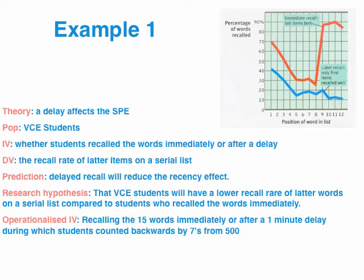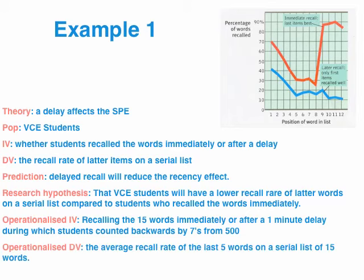Then we're going to operationalize the IV — so how exactly are we going to manipulate it? We're going to get students to recall 15 words immediately after reading them out, or after a one-minute delay. During that one-minute delay, we're going to create interference — my experimental group counted backwards by sevens from 500, so they couldn't use maintenance rehearsal. That specifies exactly how we're manipulating it: either recalling words immediately, or doing it after a one-minute delay with the interference task. The DV is the recall rate of the last five words on that serial list of 15 words.